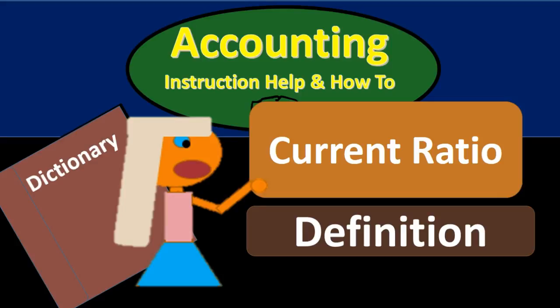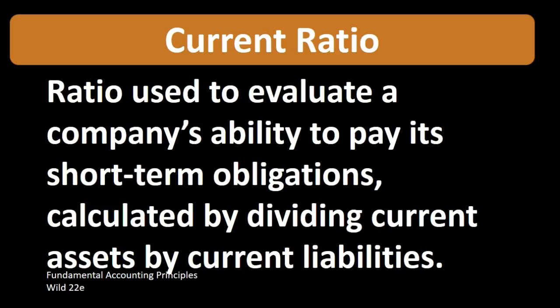In this lecture we're going to define the term current ratio. According to Fundamental Accounting Principles Wild 22nd edition, the current ratio is a ratio used to evaluate a company's ability to pay its short-term obligations, calculated by dividing current assets by current liabilities. It's information about whether or not the company can pay those obligations that are coming due soon.